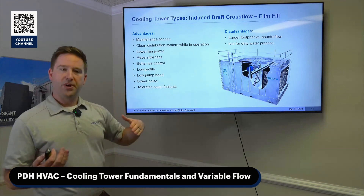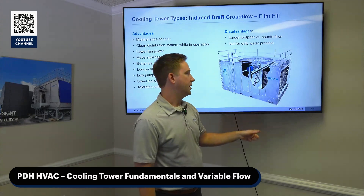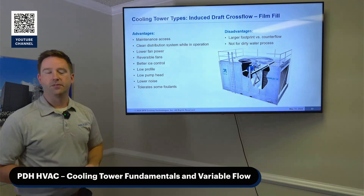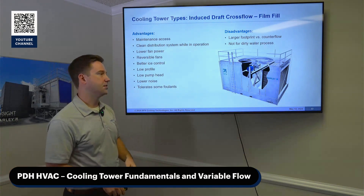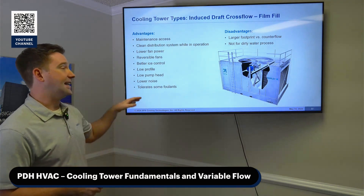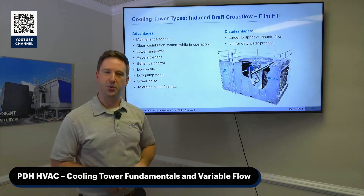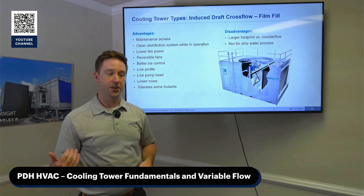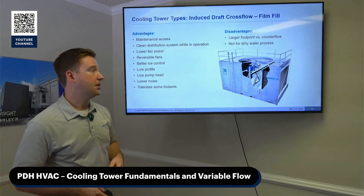Cross-flow towers also have a lower pump head than counter-flow towers, because they use a gravity flow distribution system. You pump water up into the two hot water basins, and as long as you keep four to five inches of water above those nozzles, you get the right head pressure and good water distribution over the fill. This design also allows you to reduce the flow rate down to about 33% of your design flow, which is a big benefit for variable flow applications.